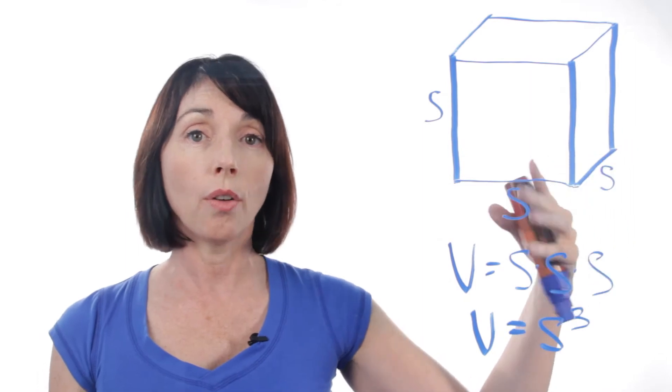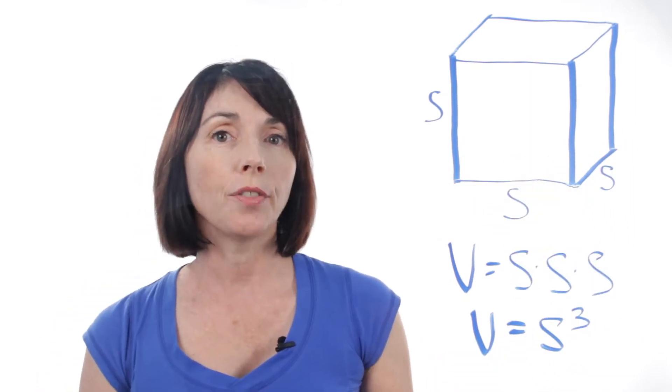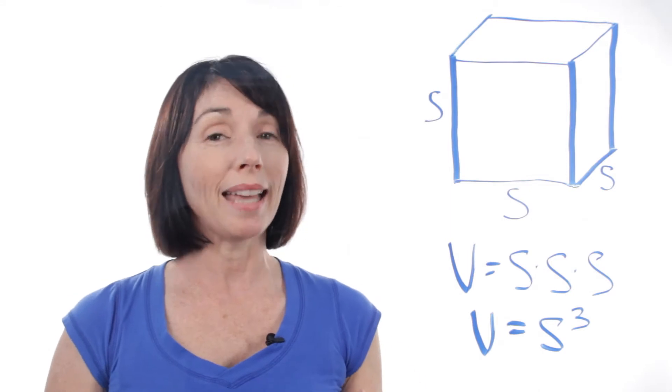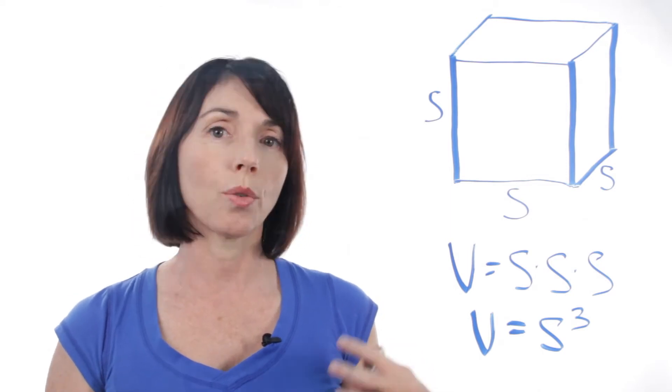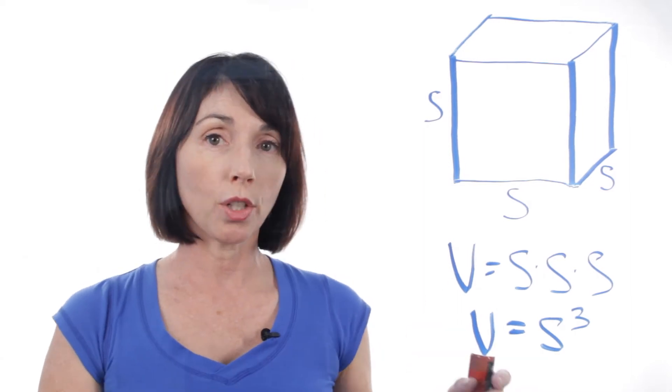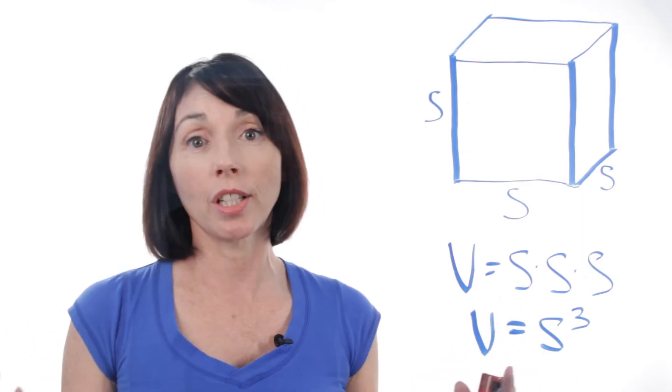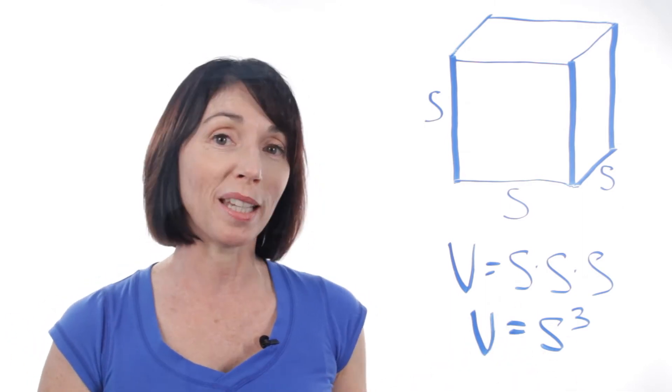So as long as you know the length of one side of the cube, you know its volume. Now, don't forget, if you calculate the volume of a cube and it has units, like inches or feet or anything like that, your units of volume will be cubic. So you'll have cubic inches or cubic feet, like when you buy a refrigerator and you judge the size of the refrigerator by the number of cubic inches.